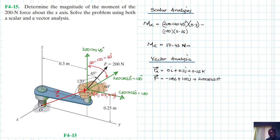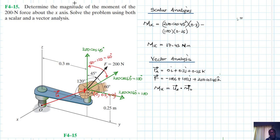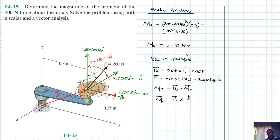So MX is equal to the unit vector along the x-axis dotted with the moment vector about O. We know that MO equals RA cross F. Now let's use the determinant method.